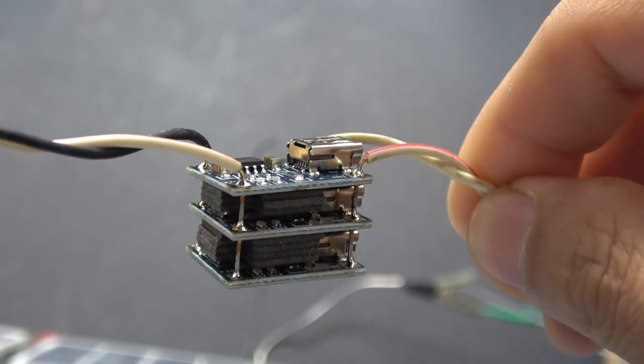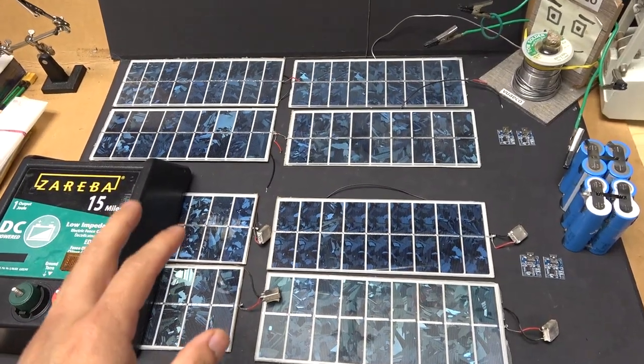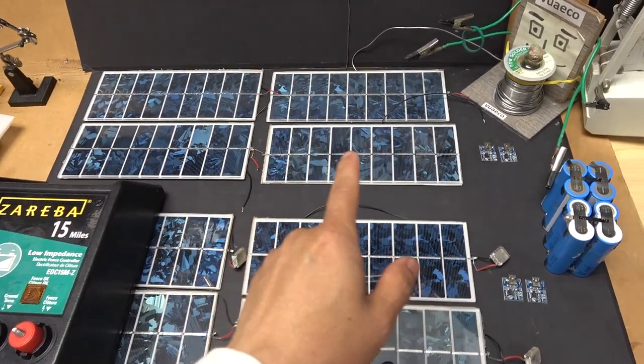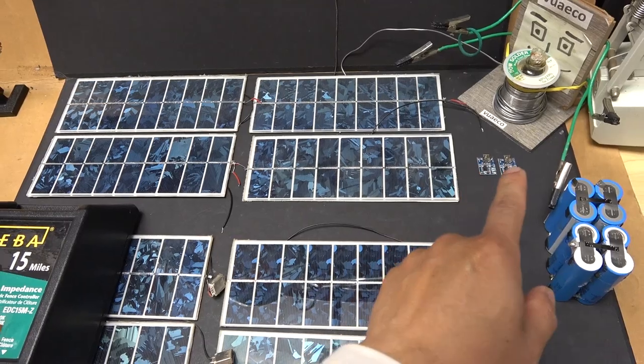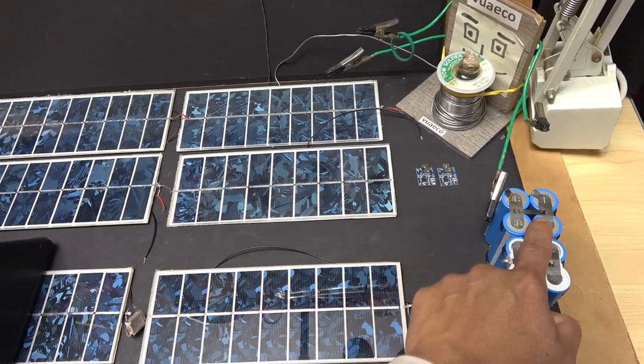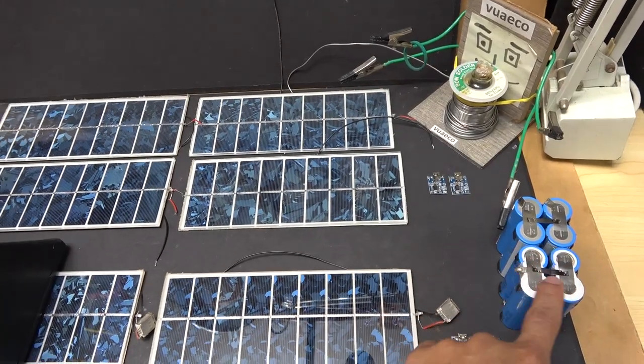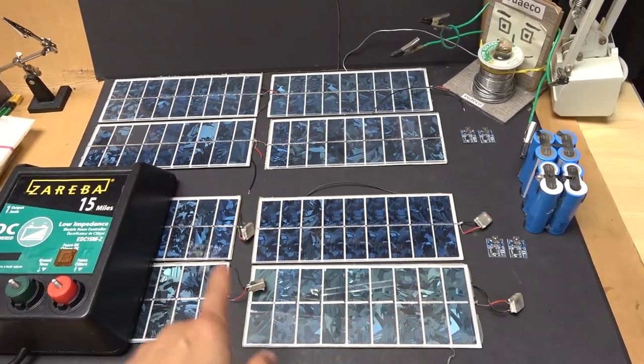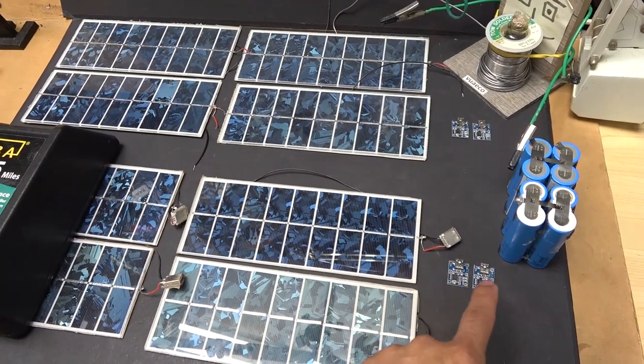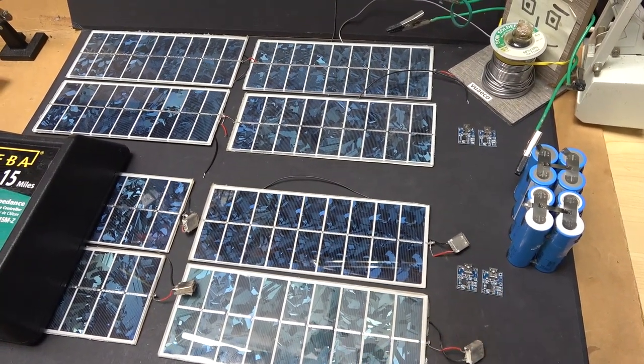In this case I'm going to use a total of eight solar panels - four in parallel connected to two of these in parallel to charge four of these in parallel. And then I have the other four in parallel which will be charged by four solar panels connected to two TP4056 boards in parallel.